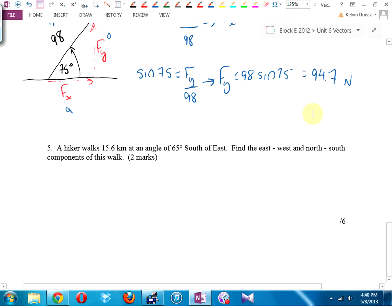The last one. A hiker walks 15.6 kilometers at an angle of 65 degrees south of east. First, I've got to draw it. South of east means go east first. Go south of east. How far? 65 degrees. How long? 15.6. So I'm going to break this up into, I'm not going to use F for force, it's a distance. Horizontal distance to the east. Vertical distance south.